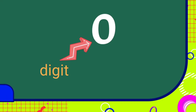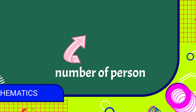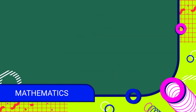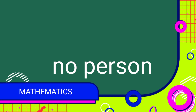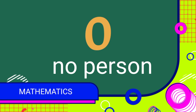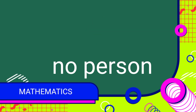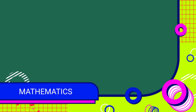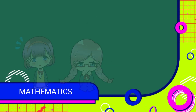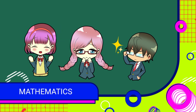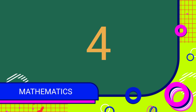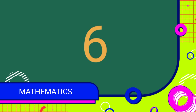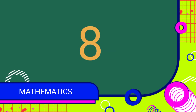As we count, we change the digit in a number place to match how many people the Mawa Arena could accommodate. For example, if we start at no person at all, we put the digit zero in a number place because zero means nothing. But then, as the people start to enter the sports arena, we begin to count 1, 2, 3, 4, 5, 6, 7, 8, and 9.